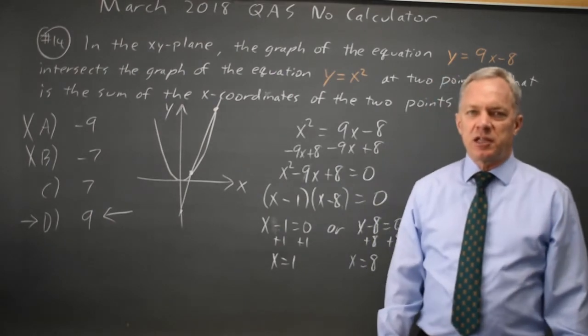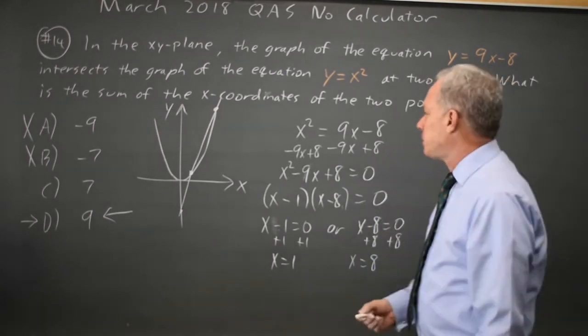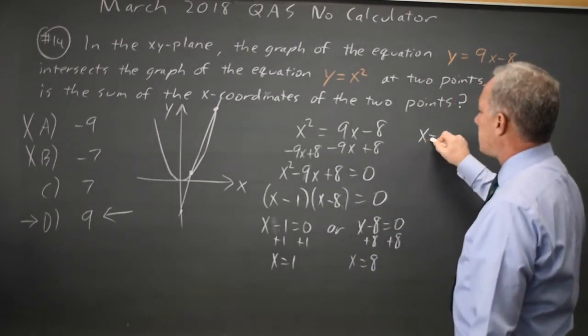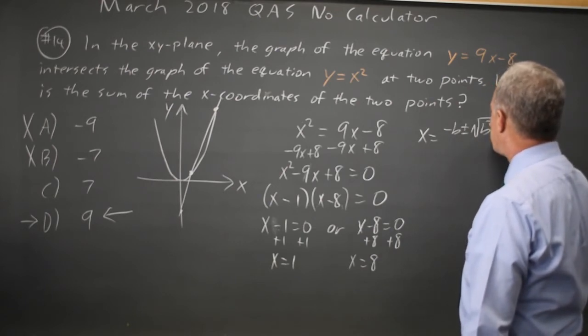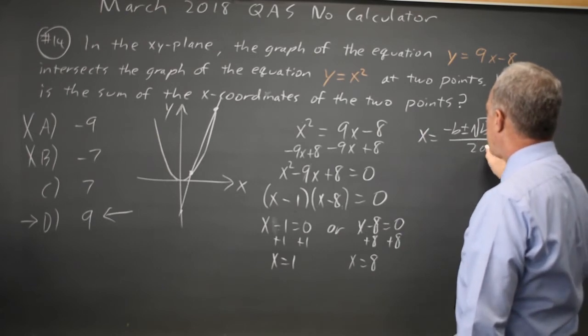Alternatively, looking at it from the perspective of the quadratic formula, I have x equals negative b plus or minus square root b squared minus 4ac all over 2a.